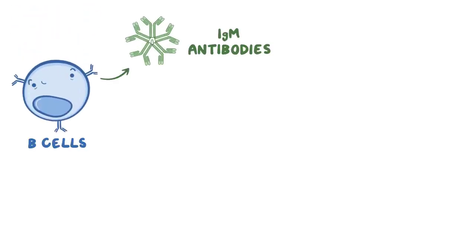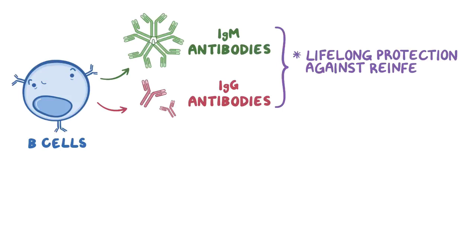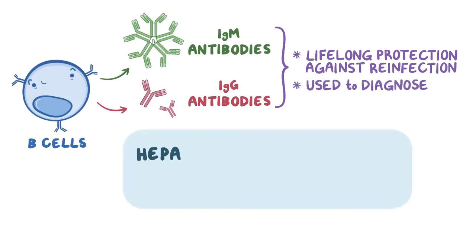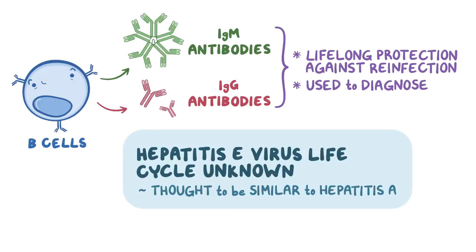The immune system also secretes antibodies against the virus. Specifically, B cells create IgM antibodies first and IgG antibodies later. These antibodies provide lifelong protection against reinfection and are used to diagnose the disease. While the hepatitis E virus life cycle is still unknown, it's thought to be similar to that of hepatitis A.